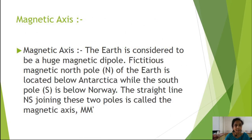The different parameters of earth magnetism are as follows. The first parameter is the magnetic axis. The earth is considered to be a huge magnetic dipole. The fictitious magnetic north pole of the earth is located below Antarctica, while the south pole S is below Norway.